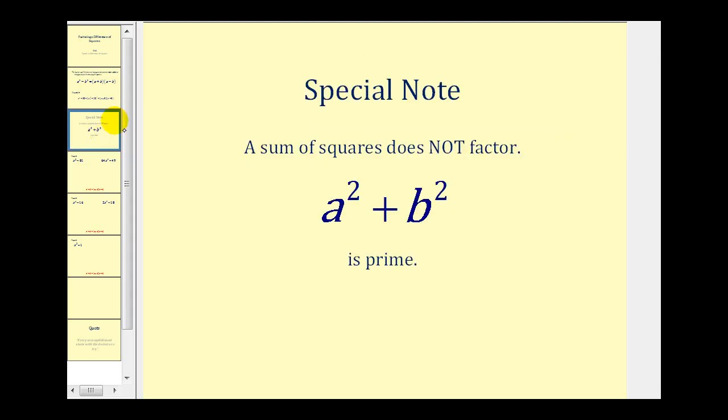Now there's one more thing we should note. If we have a sum of squares, it will not factor and is prime. So we can only factor a difference of squares, not a sum of squares.